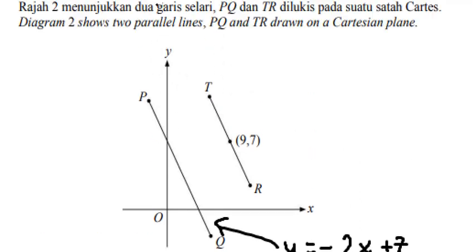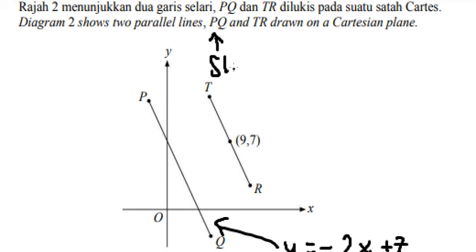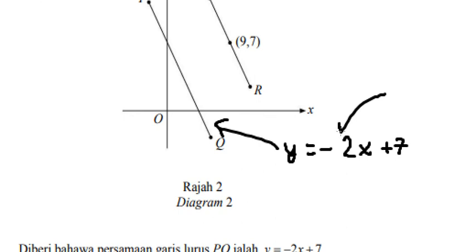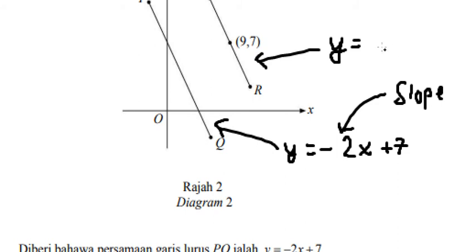Because we have two parallel lines, the slope of this line and the slope of TR will have the same value. So the slope is negative 2. We have the formula y equals negative 2x plus a.